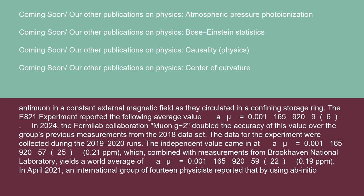The independent value came in at a_μ equals 0.00116592057 (0.21 ppm), which combined with measurements from Brookhaven National Laboratory yields a world average of a_μ equals 0.00116592059 (0.19 ppm).